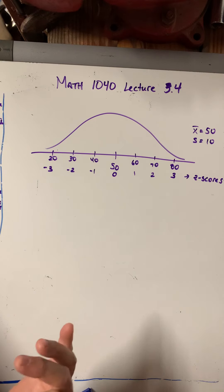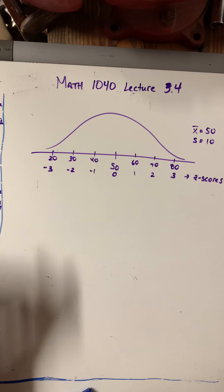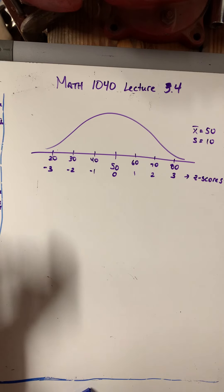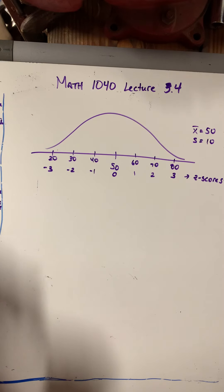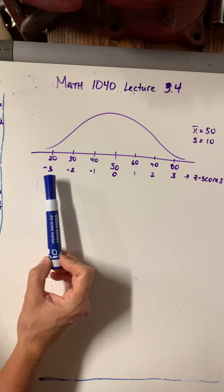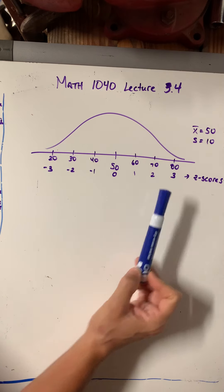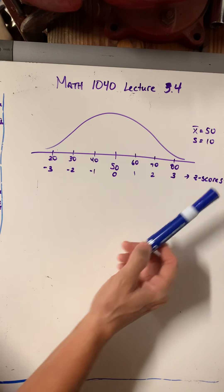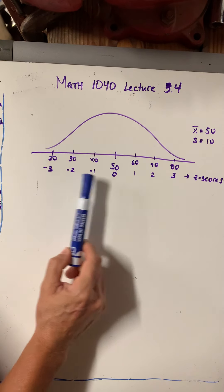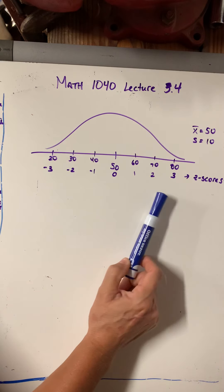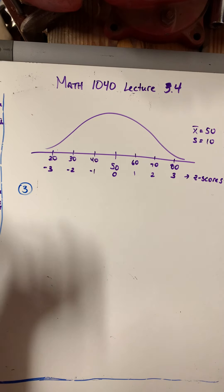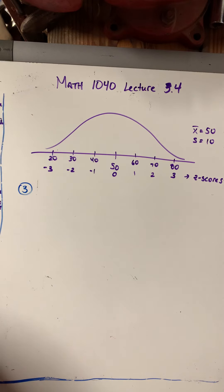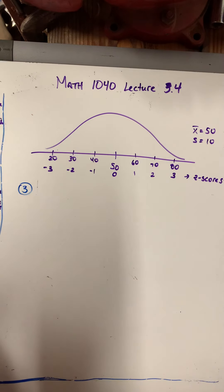Z-scores refer to how many standard deviations away from the mean something was. For the first half of this homework assignment, they set up story problems where you're trying to compare two different things. One reason it's convenient to switch to a z-score is that instead of needing two different pictures, you could plot both on the same picture using z-score numbers. I'm looking at question number three.